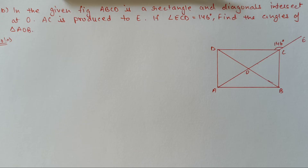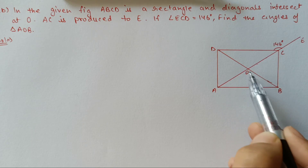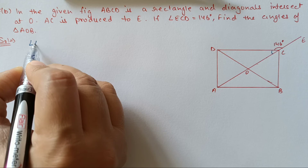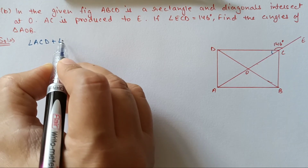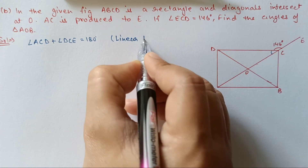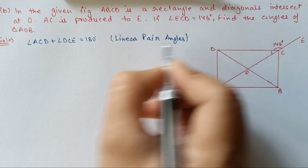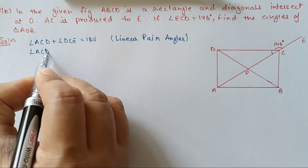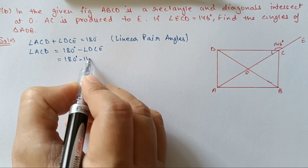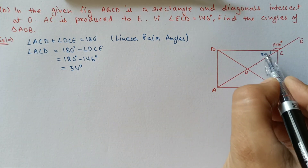Next, question 7B. In the given figure, ABCD is a rectangle and diagonals intersect at O. AC is produced to E and angle ECD equals 146 degrees. Find the angles of triangle AOB. First, angle ACD plus angle DCE equals 180 degrees as they form a linear pair. So angle ACD equals 180 minus 146 equals 34 degrees.